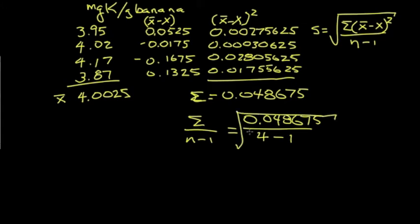Let's take the square root. So the square root of this should give us the estimate of the standard deviation for this sample of 4. And numerically, working that out on the calculator, I get 0.1273, and there's some more digits.